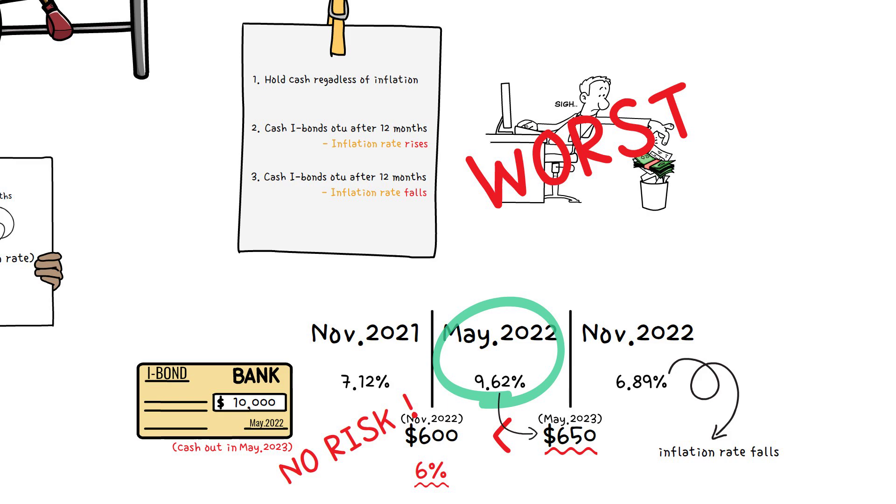As previously stated, the current interest rate on I bonds is 6.89%. The opportunity to earn a huge yield of 9.62% was passed up, but I believe 6.89% is also a good rate. It's impossible to predict the future rate of inflation, but hopefully you'll be able to smile regardless of whether it's higher or lower.